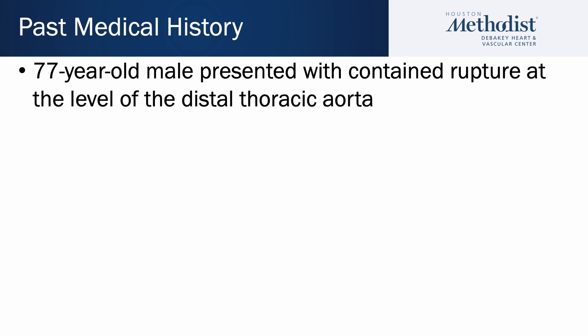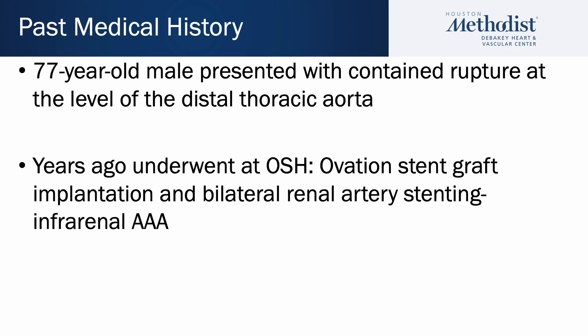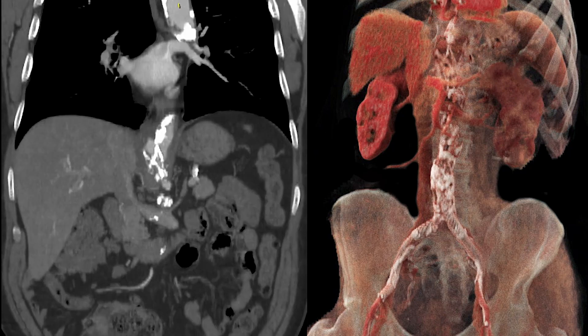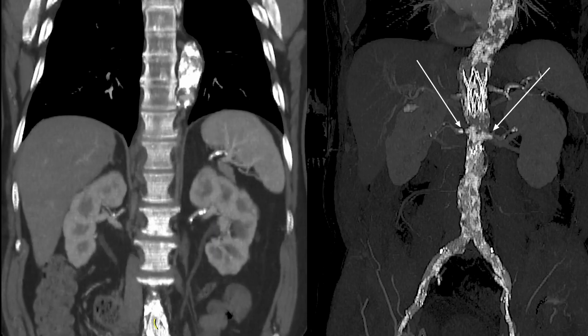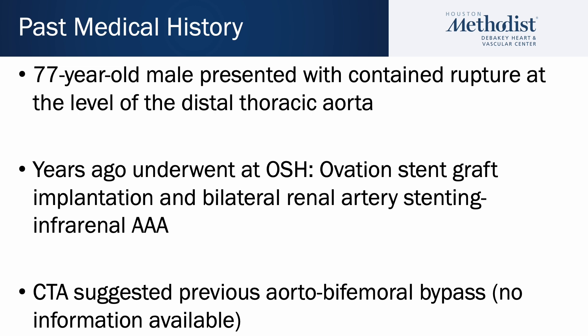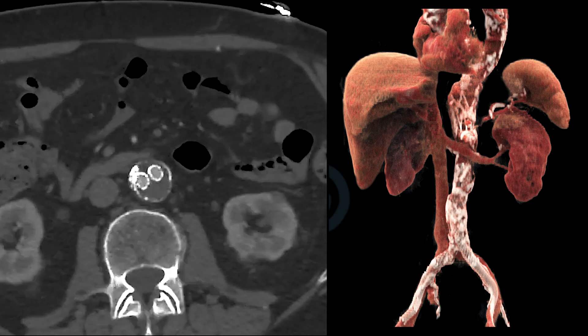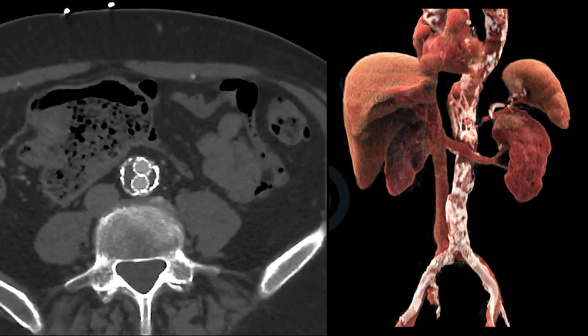A 77-year-old male presented with contained rupture of the distal thoracic aorta. The patient was hemodynamically stable. A couple of years ago he underwent EVAR due to juxtarenal aortic aneurysm. Following renal artery coverage, bilateral covered stent implantation was performed. Preoperative imaging also showed the presence of an aorto-bifemoral bypass, presumably performed prior to stent graft implantation.